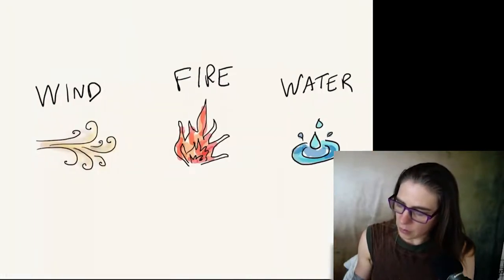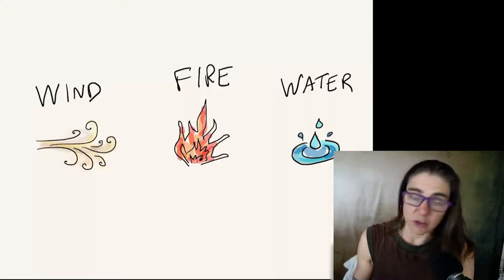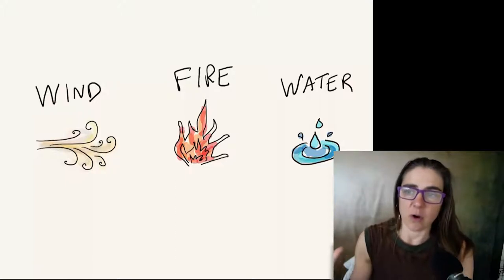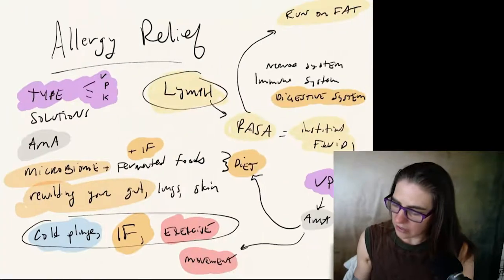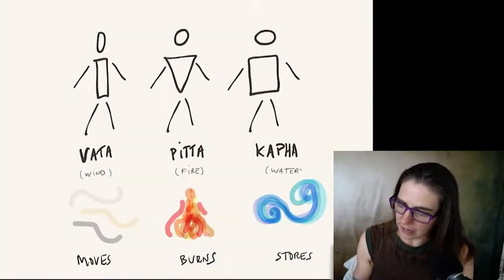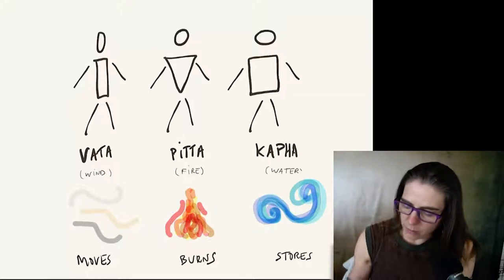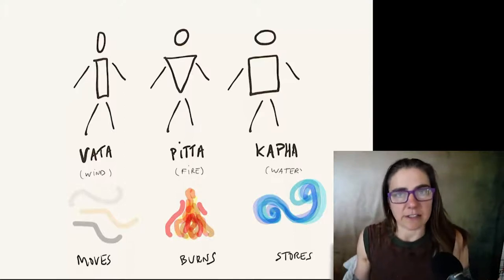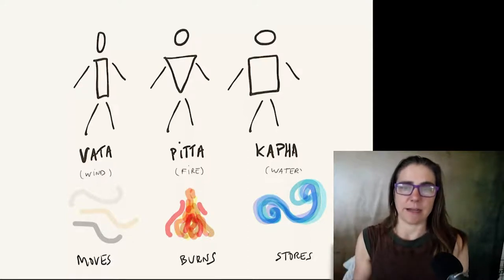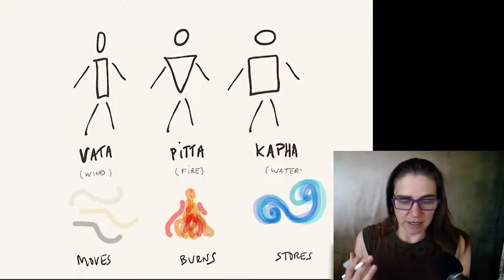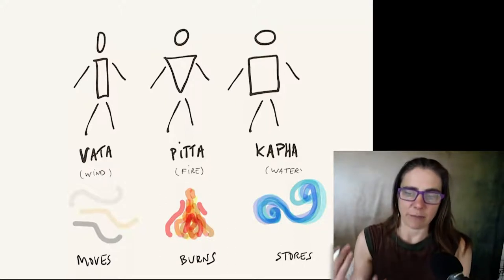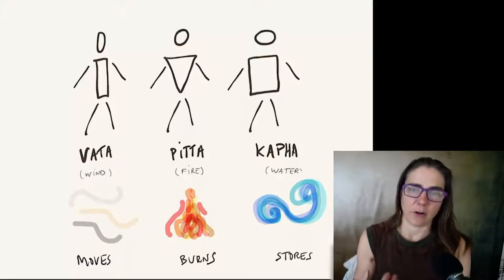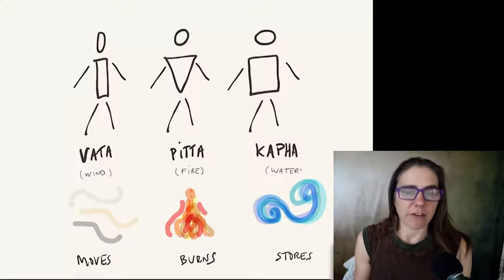So where do we go from here? We talked a bit about these forces, these forces of wind that creates dryness, the force of fire which creates heat, and the force of water that creates cohesion. The force of wind creates movement and it then secondarily creates dryness. So now what we want to look at is how this works with body types.